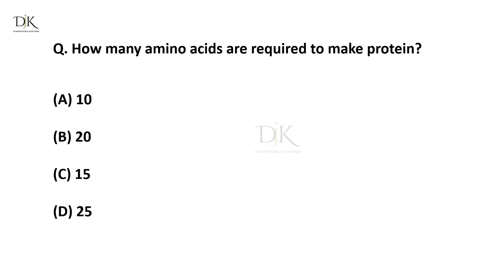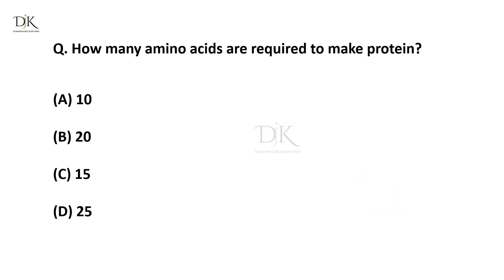How many amino acids are required to make protein? The right answer is 20.